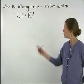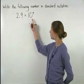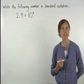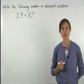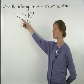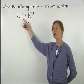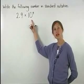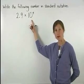The number shown here, 2.9 times 10 to the fourth power, is written in scientific notation. Since it's composed of a decimal between 1 and 10, in this case 2.9, and a power of 10, in this case 10 to the fourth power.